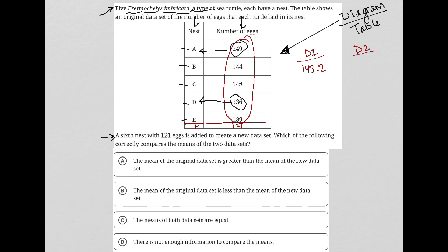Now data set two, of course, is going to include that nest F, that 121. So I'll just do my math again. I have 149 plus 144 plus 148 plus 136 plus 139 plus 121 divided by 6, and there my mean is 139.5. So a little bit lower.